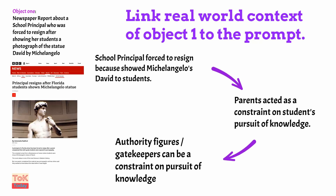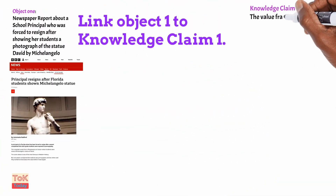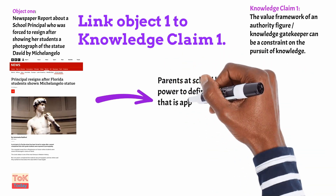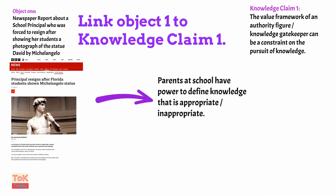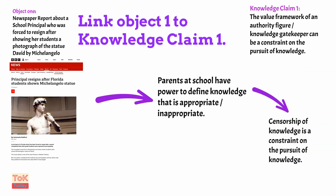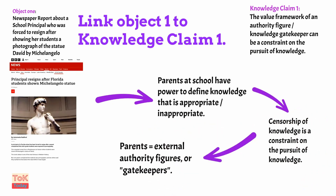Now I have to link object one to knowledge claim one: that the value framework of an authority figure or knowledge gatekeeper can be a constraint on the pursuit of knowledge. I'm going to say that the parents at the school have the power to define what knowledge is appropriate or inappropriate for the students to pursue, and therefore they can censor knowledge — this is a constraint on the pursuit of knowledge, and the parents are external authority figures who are gatekeepers.